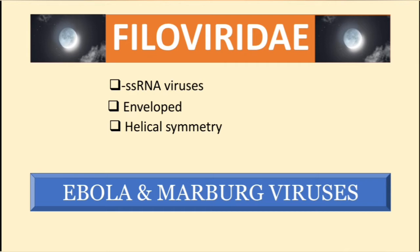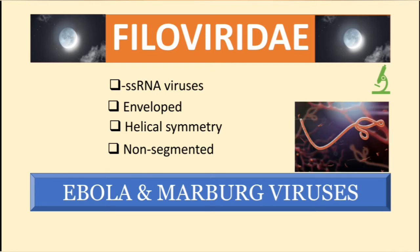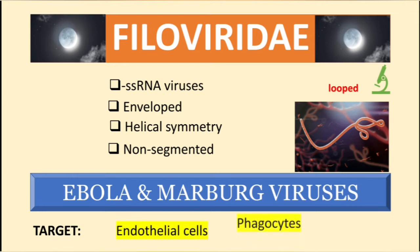Like most RNA viruses, they replicate in the cytoplasm of the host cell, and they are non-segmented viruses. Under the microscope they appear like filaments or loops — 'filo' means filaments. The target cells for these two viruses include endothelial cells, phagocytes, and hepatocytes.